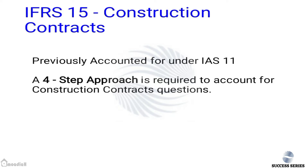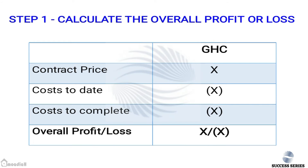Construction contracts were previously accounted for under IAS 11. Under IFRS 15, we use a four-step approach. Step one is to calculate the overall profit or loss, which is derived from: contract price minus cost to date minus cost to complete, giving us our raw profit or loss.